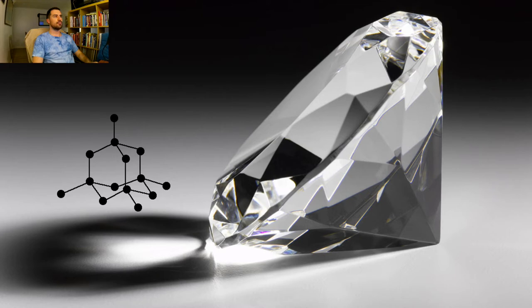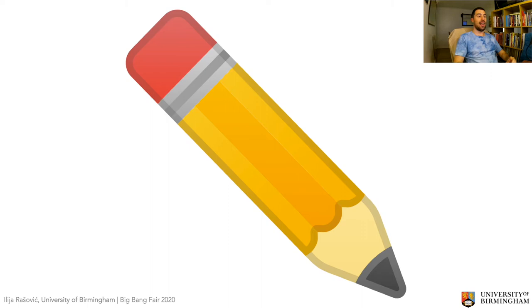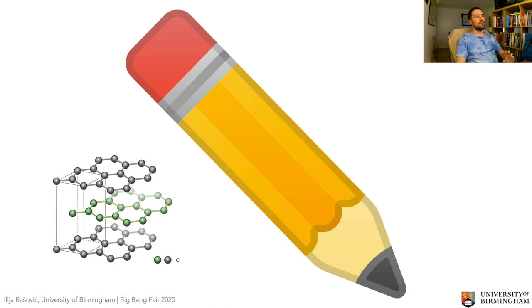There is another form of carbon which doesn't look anything like the lovely transparent and glistening diamond — and that's graphite, the very lead in your pencil. It's important to note that pencil lead is not actually made out of lead. Every time you write with your pencil, the lead is actually made out of graphite. Graphite is interesting because, instead of every carbon atom being bonded to four others, it's bonded to three, making flat hexagonal sheets which are not directly bonded to each other — and because of that, those sheets can slide over each other, which is why you can use graphite pencils.